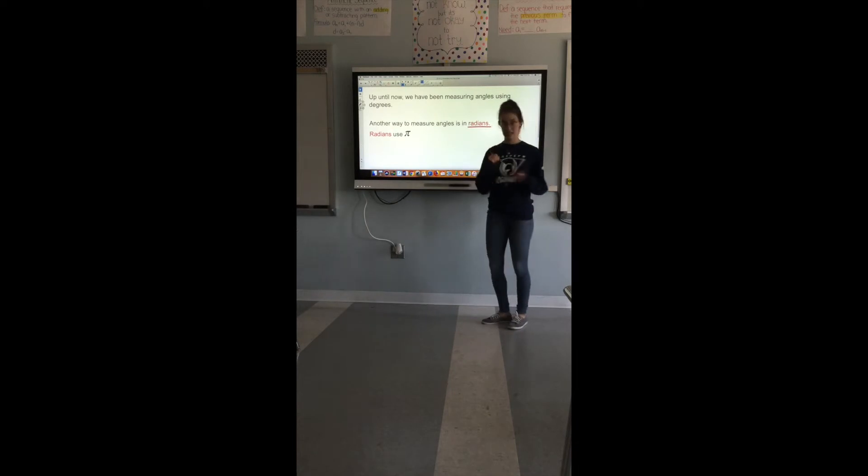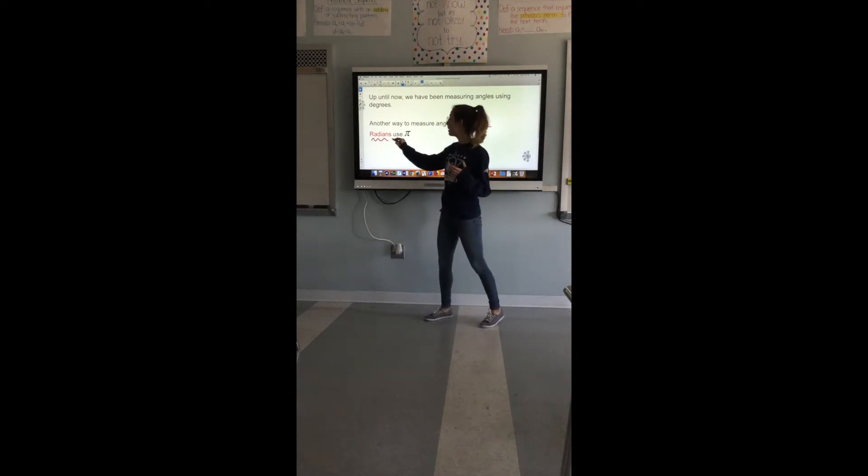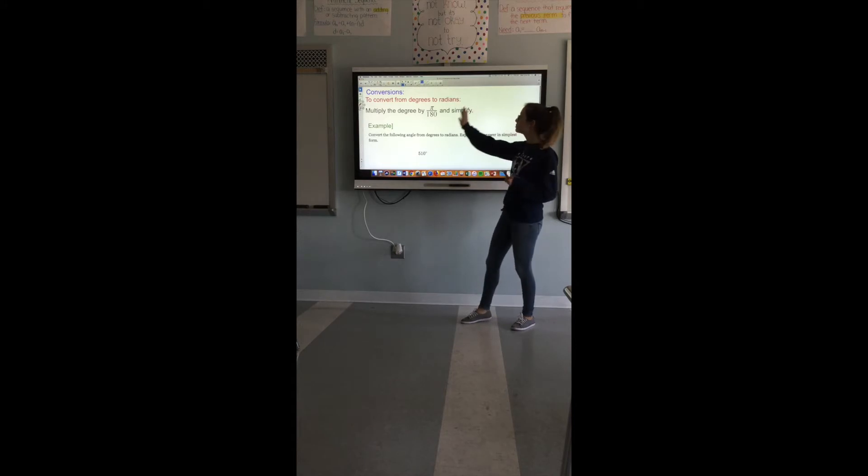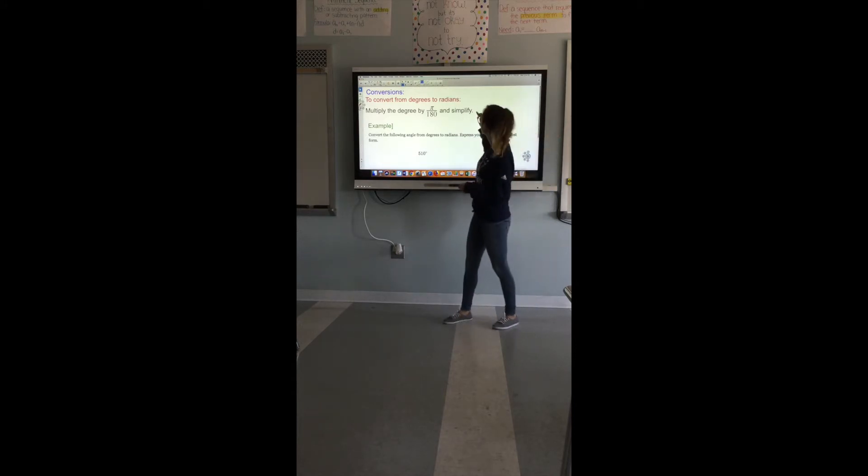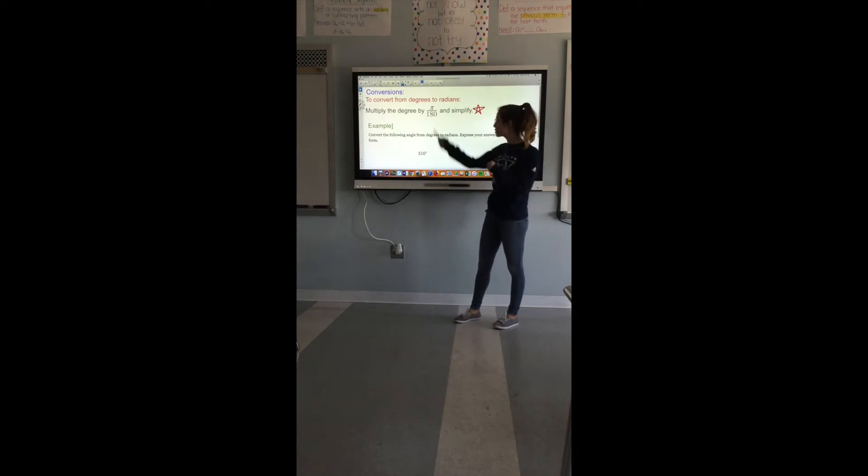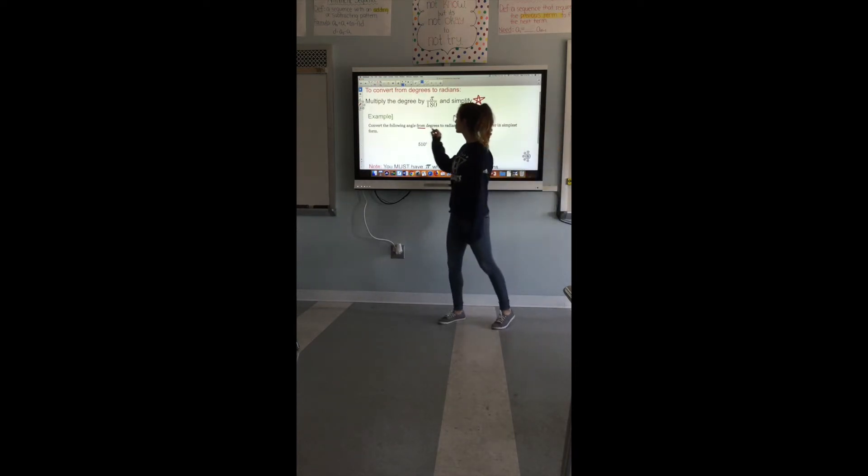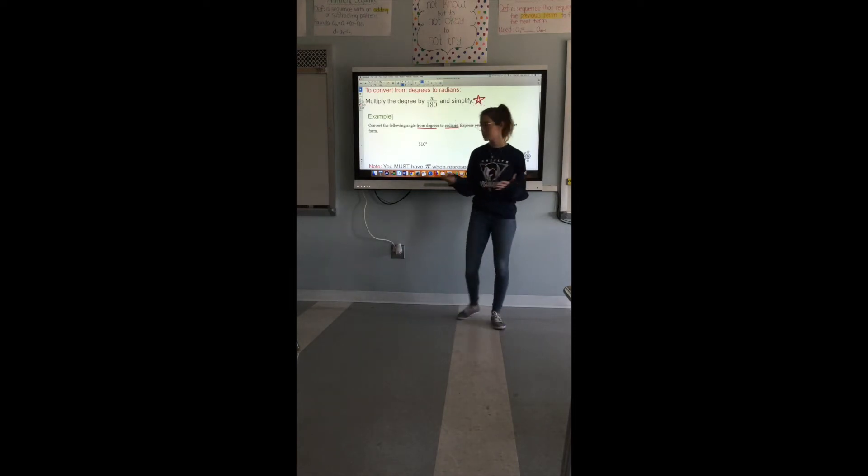Okay, up until now we've only been measuring angles using degrees but another very common way to measure angles is using something called radians. Radians use pi so we are going to be using the pi constant today. To convert from degrees to radians here is our step: you have to multiply the degree by pi over 180 and simplify. To convert the following from degrees to radians, this little circle thing here that's a symbol for degrees so we have five hundred and ten degrees. To get this into radians you have to multiply by pi over 180.